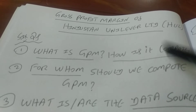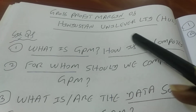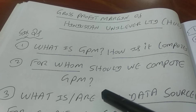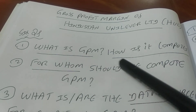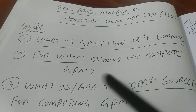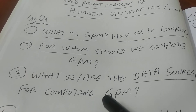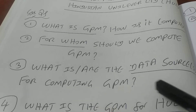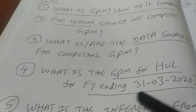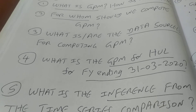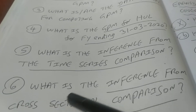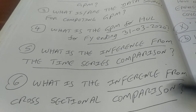Hello all. Today we will have a discussion on Gross Profit Margin of Hindustan Unilever Limited. There are six questions we are trying to discuss in this video: what is Gross Profit Margin and how is it computed; for which kind of companies should we compute GPM; what are the sources for computing GPM; what is the GPM for HUL for FY ending 31st March 2020; what is the inference from the time series comparison; and what is the inference from the cross-sectional comparison?